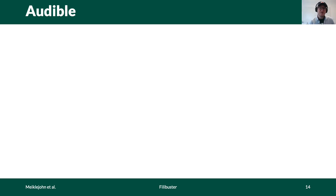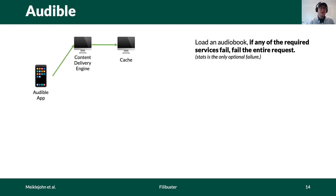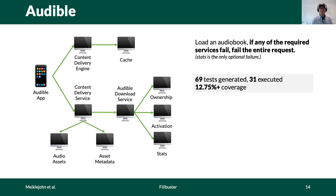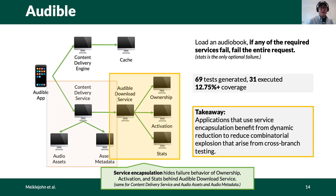The first application we'll discuss is Audible, a service for renting audiobooks. The mobile client first talks to a content delivery engine to identify the location of a particular content delivery service, which uses a number of other services to verify DRM, update licenses, activate licenses, record statistics, and provide actual audio files to the user. To cover this, we had to generate 69 tests and execute 31 of them — this is because of service encapsulation. The possible failures of ownership, activation, and stats are hidden behind the Audible download service, and the asset metadata and audio asset services are hidden behind the content delivery service, allowing us to avoid redundant testing.